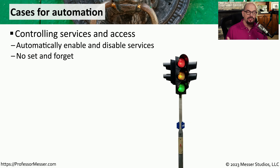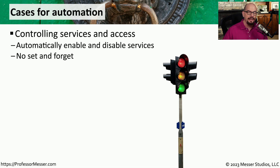Automation can also be used to enable or disable services. For example, if a service needs to be used for a certain amount of time, you can have the script enable the service, and then after that time frame is complete, it can then disable the service without any human intervention.